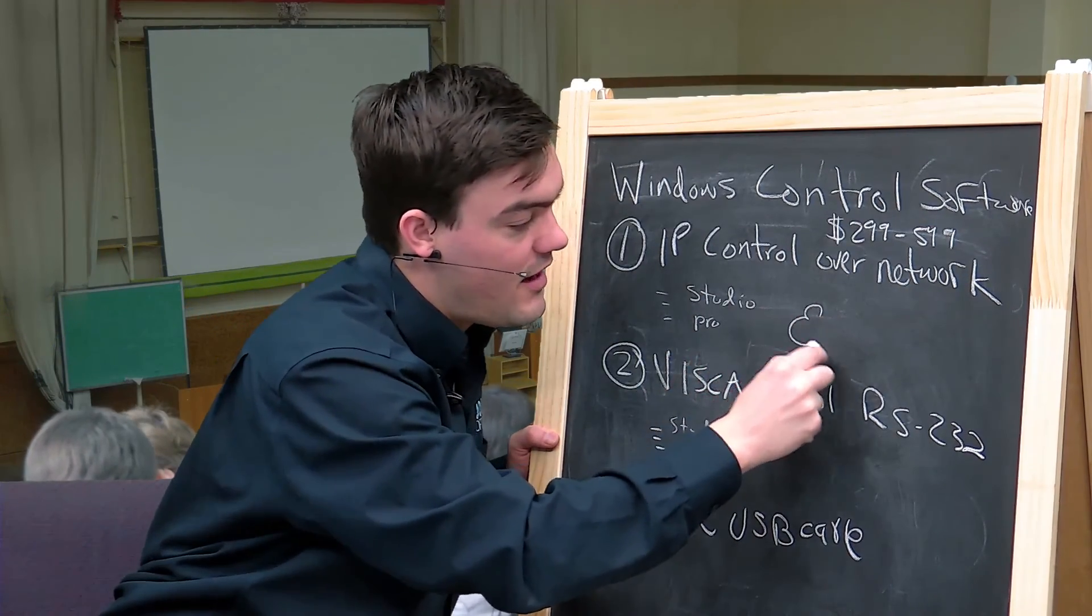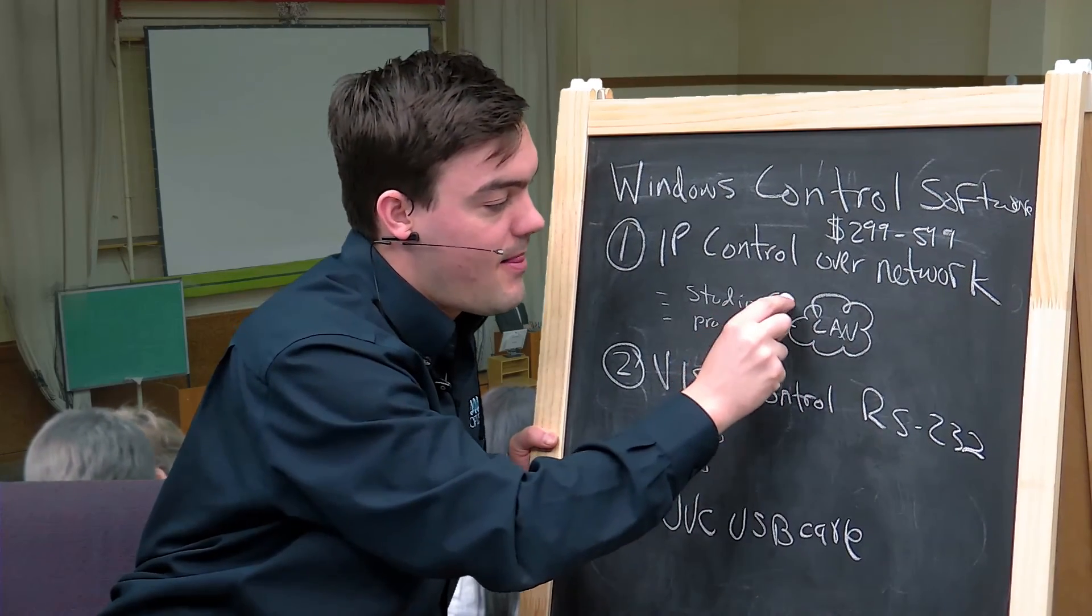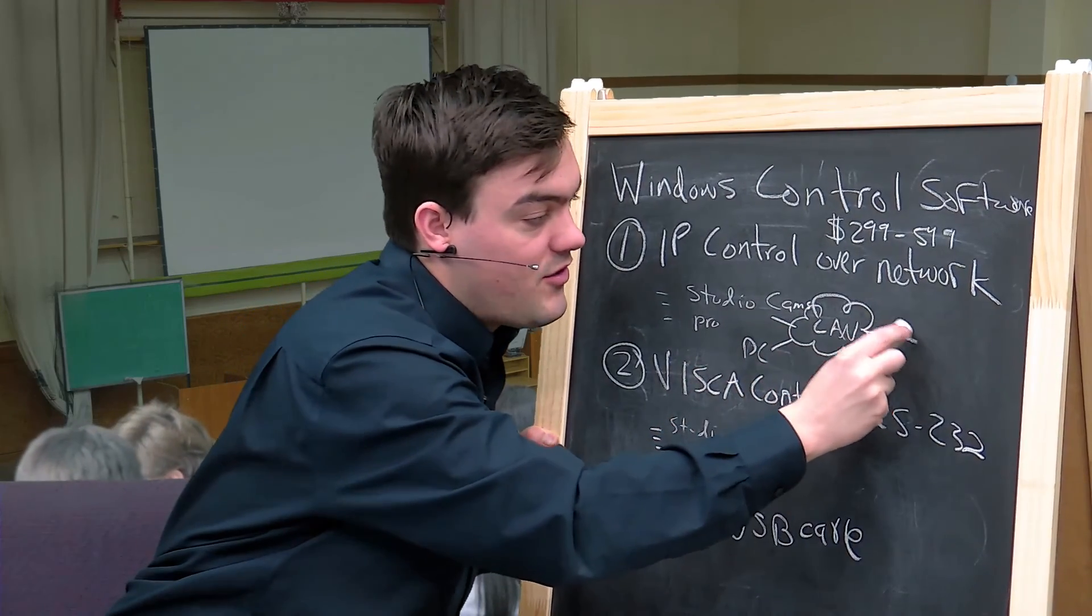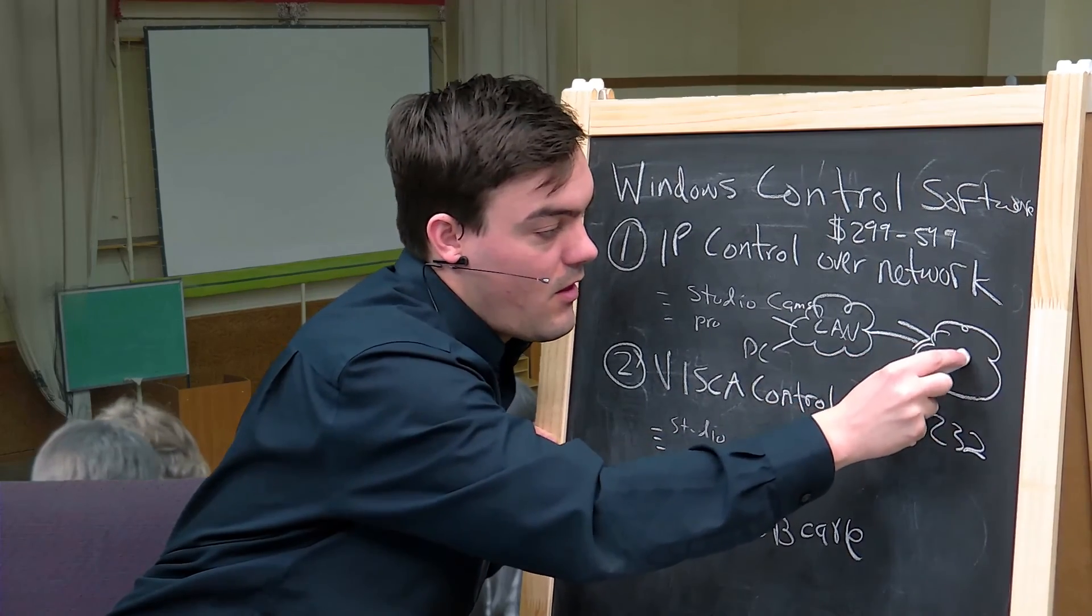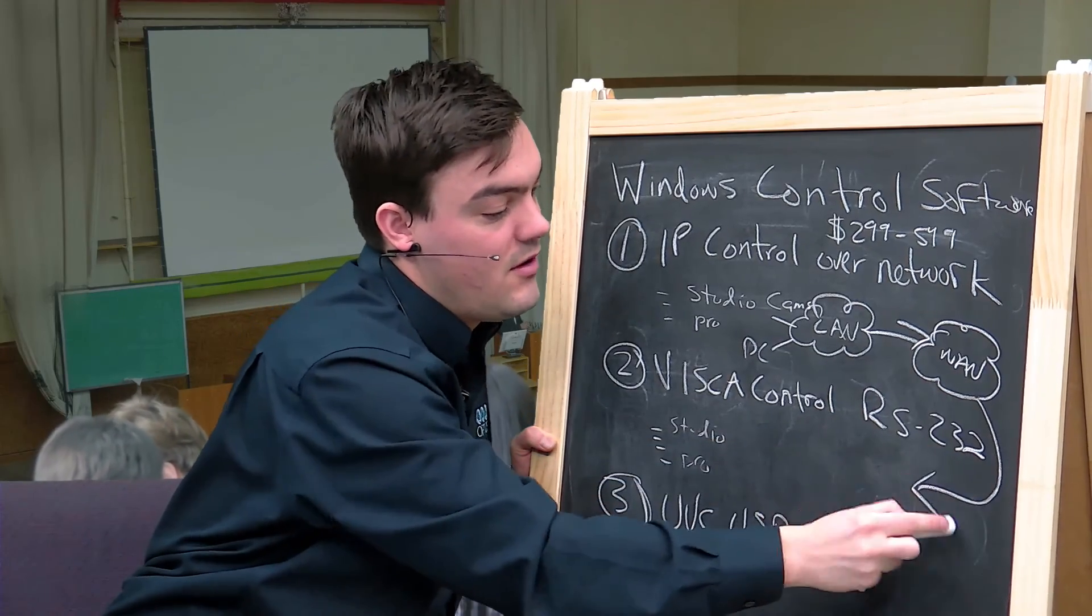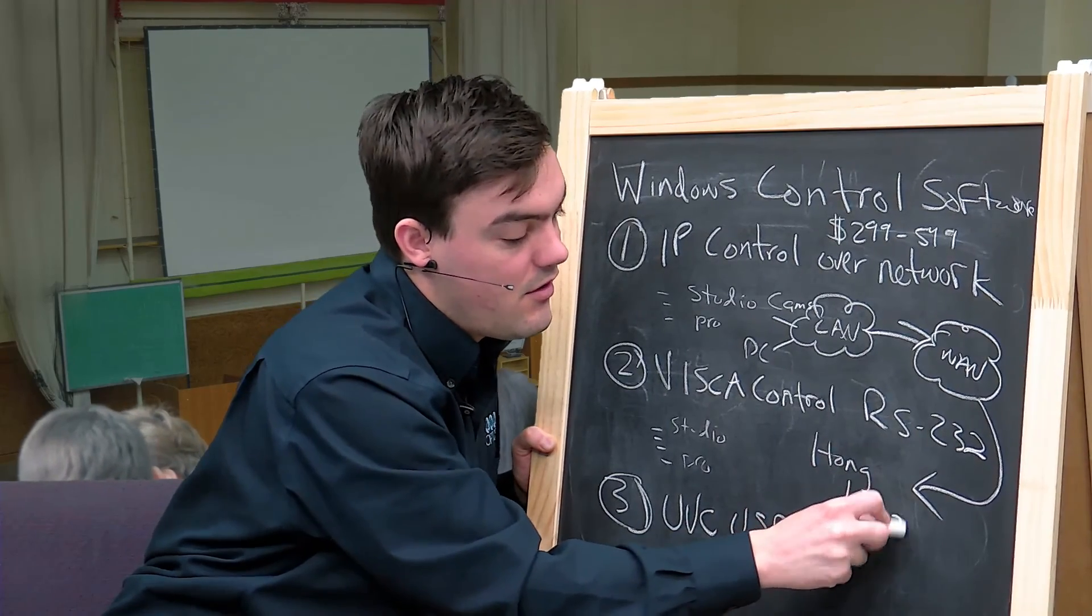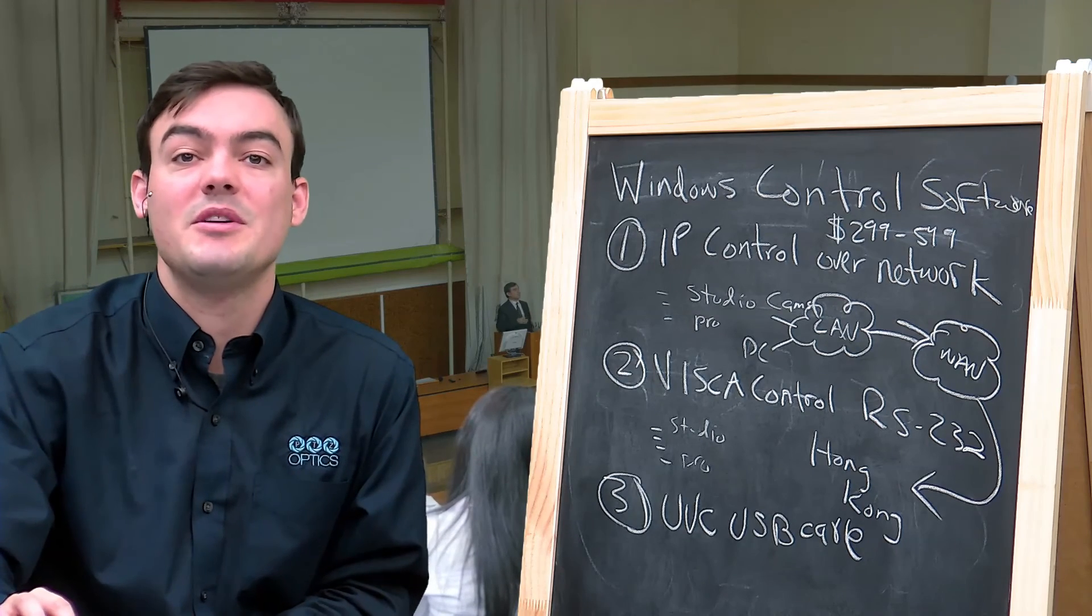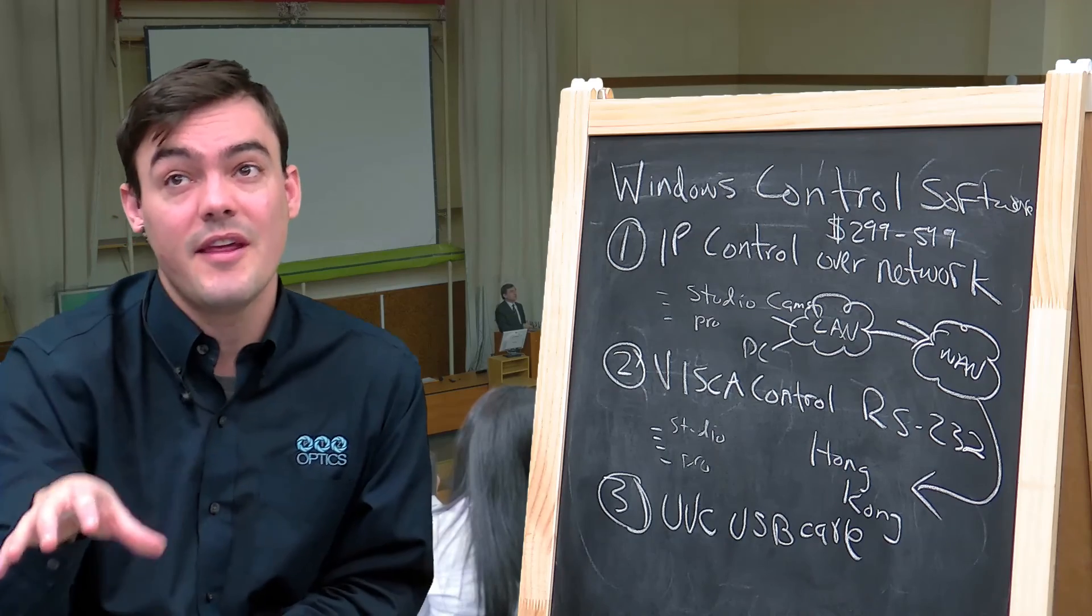The external IP address, so if this is your local area network, this is where the cameras are, this is where your PC running the software is. If you want to go to the external IP address like in the wide area network, we can set it up to have an external IP and pass this to, I'm just going to write Hong Kong but you get it, anywhere in the world you can now control the cameras through this software. So that's the remote control capabilities.